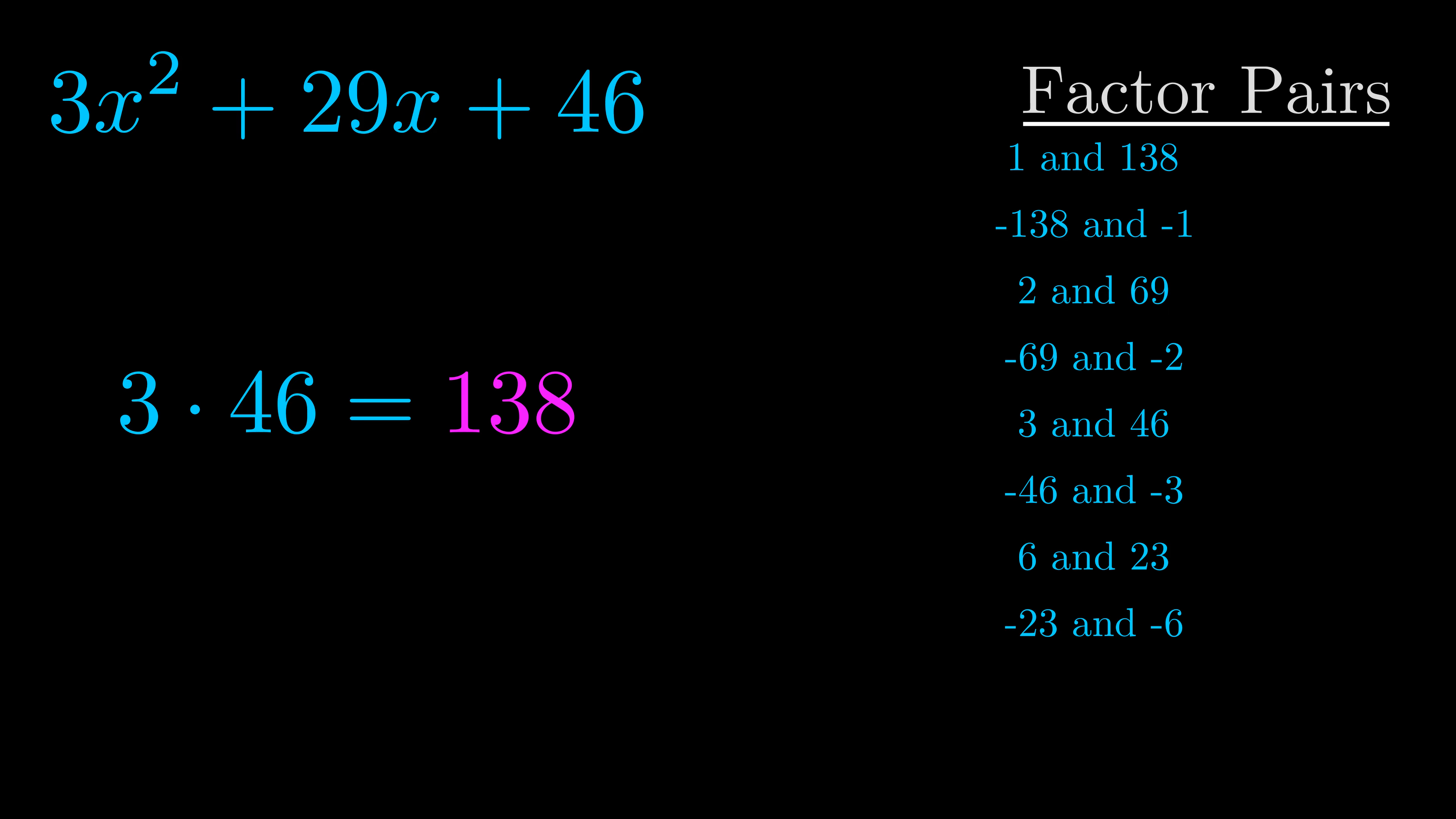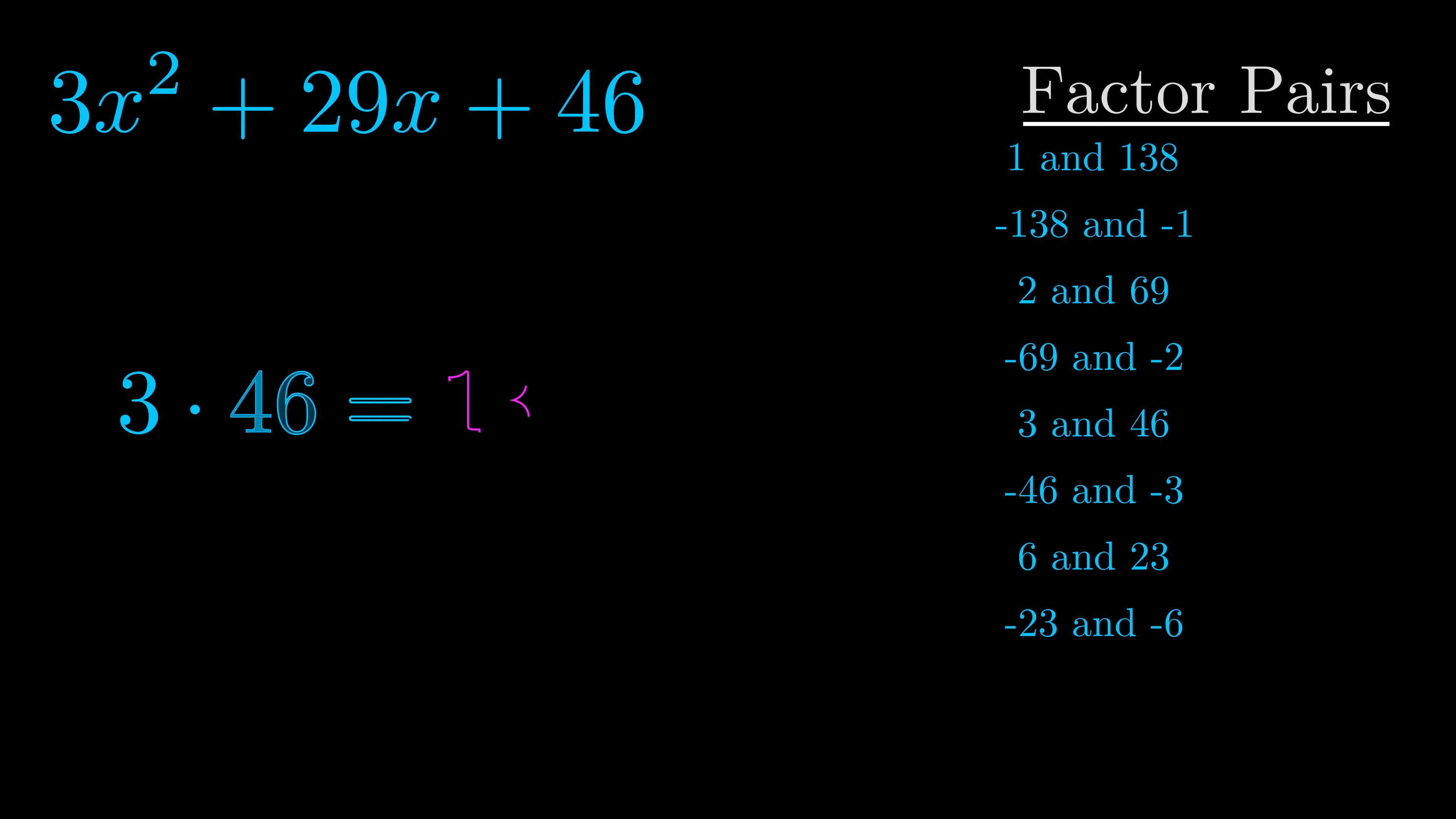Now once you have these factor pairs, the goal is to find which of these pairs adds to the b value. The b value is the coefficient on the x term. That's the middle term, the one that we haven't done anything with yet. And really this is the only factor pair that we need.